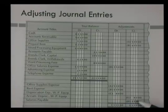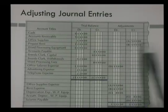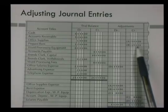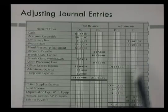The first one has to do with office supplies — getting that account up to date. We have our debit and our credit amount for transaction A. Then the second one is to get the prepaid rent up to date. We have rent expense debited and prepaid rent credited — a debit and a credit for the B adjustment.